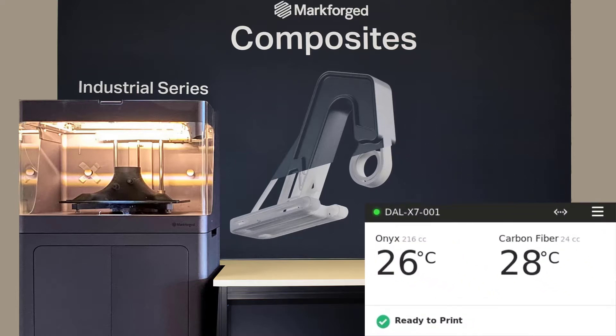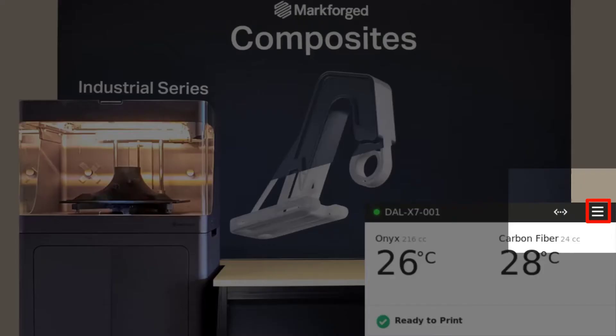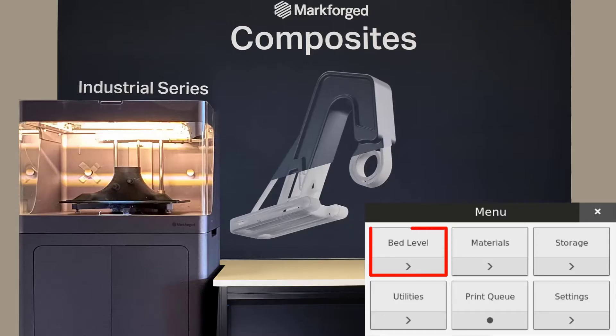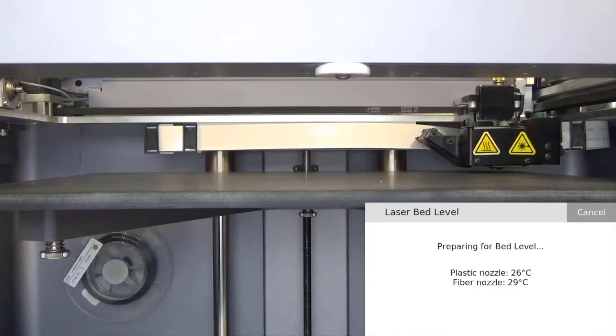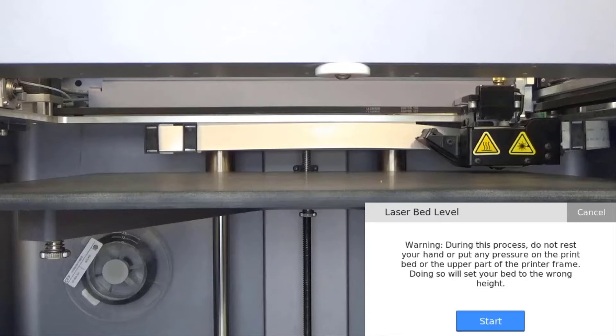To get to the laser bed level utility we will navigate to the menu, bed level, laser bed level. If necessary, wait for both nozzles to cool. This will help prevent injury during the leveling procedure. Also, make sure to read the warning on the screen about putting pressure on the print bed during the leveling process, then press start.